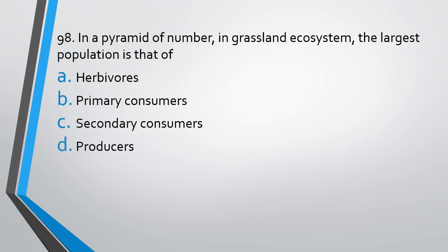Question number 98. In a pyramid of numbers in a grassland ecosystem, the largest population is that of: (A) herbivores, (B) primary consumers, (C) secondary consumers, (D) producers. The correct answer is option D, producers.